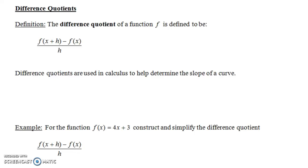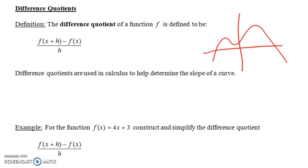In this video we're going to talk about difference quotients. The difference quotient of a function f is defined to be the expression: f of x plus h, minus f of x, all over h. It's a complex-looking expression — so what is the point of difference quotients, and how are they used? It turns out they're used in calculus to help you determine the slope of a curve. You can talk about the slope at various points along the curve, and difference quotients help you find that. But in this class we just need to know how to construct and simplify a difference quotient for a given function.